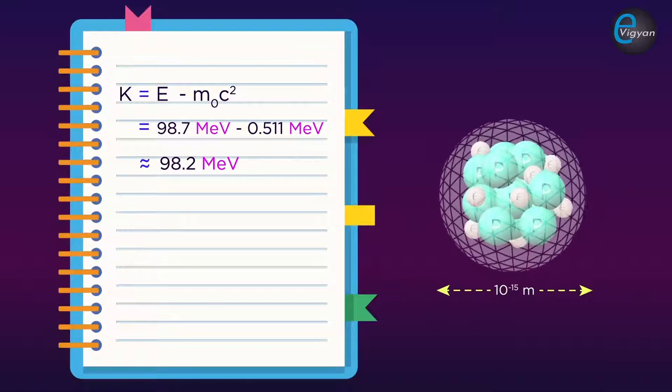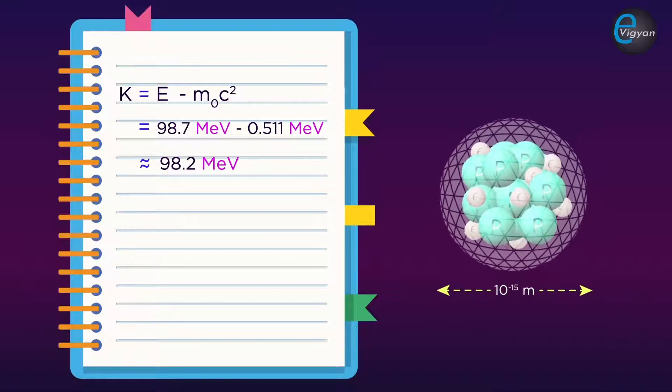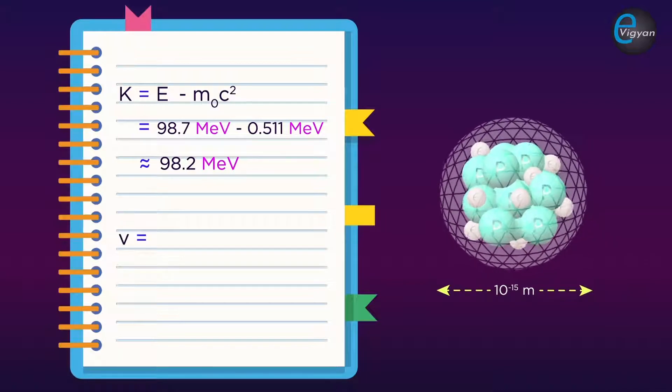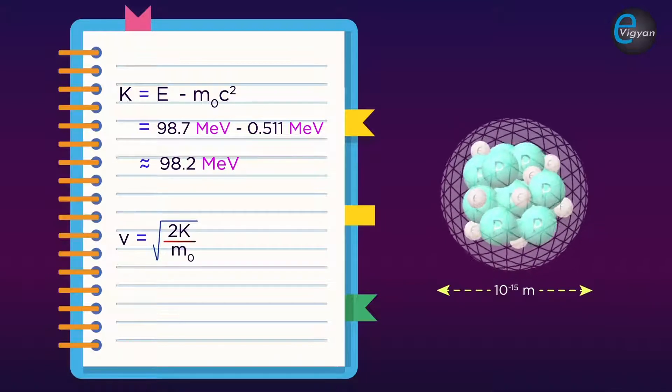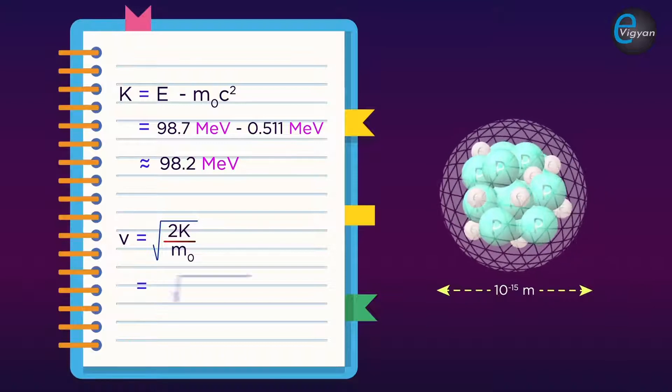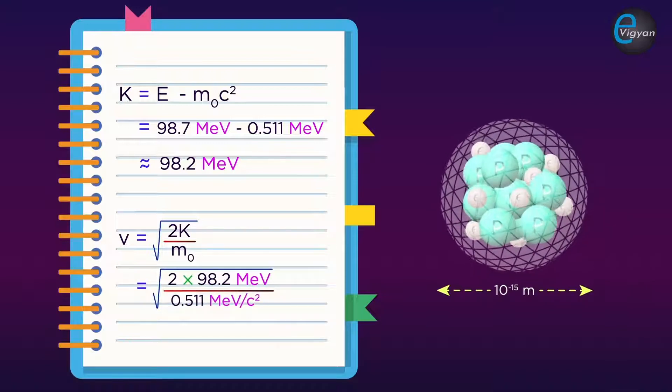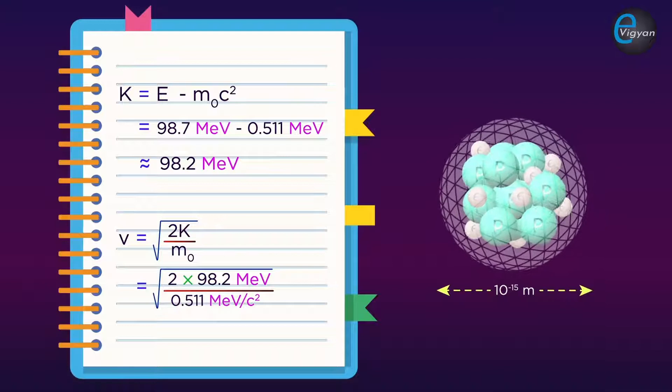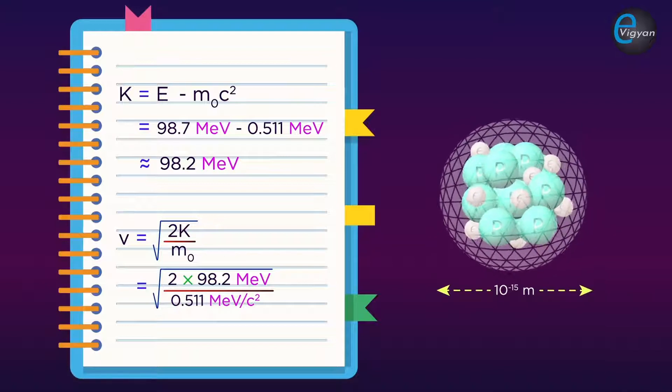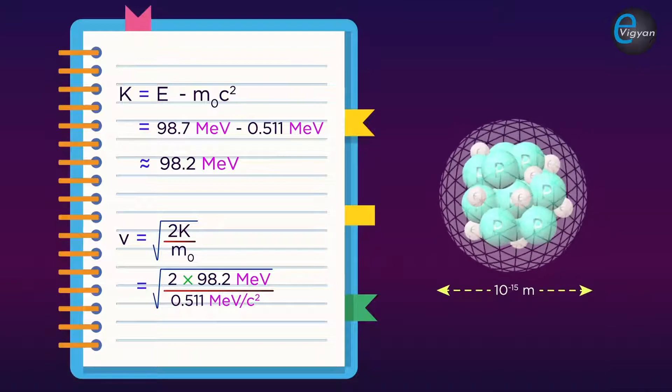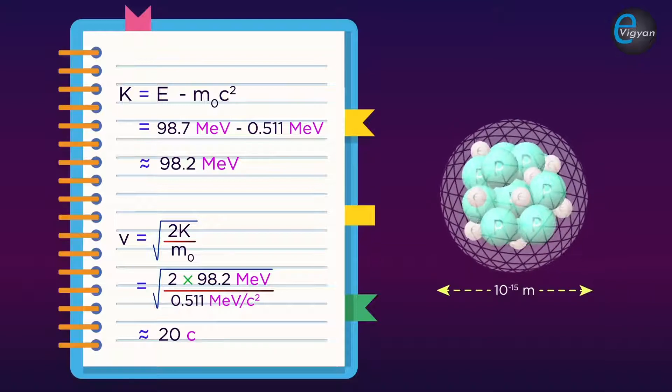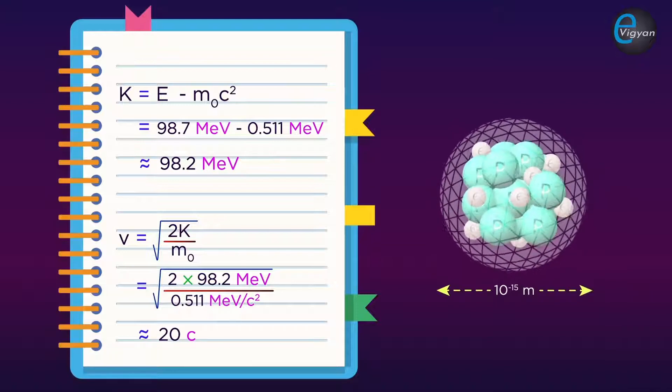Now, if you calculate the speed of the electron from this kinetic energy, then it will be v equal to √(2K/m₀), which is equal to √(2 times 98.7 MeV upon 0.511 MeV/c²), and that comes out to be 20c, that is 20 times the speed of light.